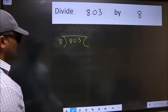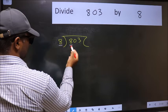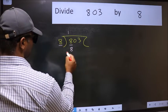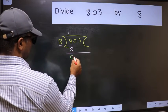Next. Here we have 8 and here also 8. When do we get 8 in 8 table? 8 once 8. Now we should subtract. We get 0.